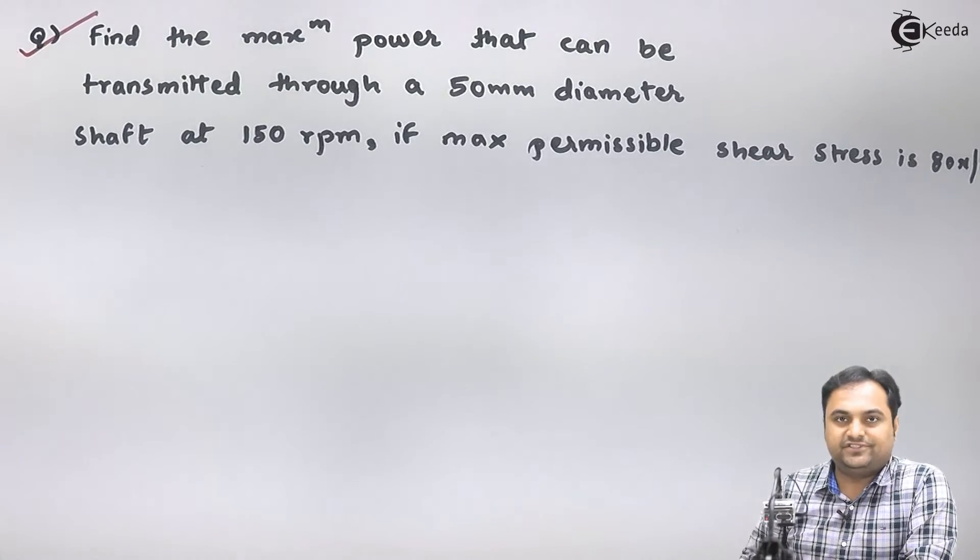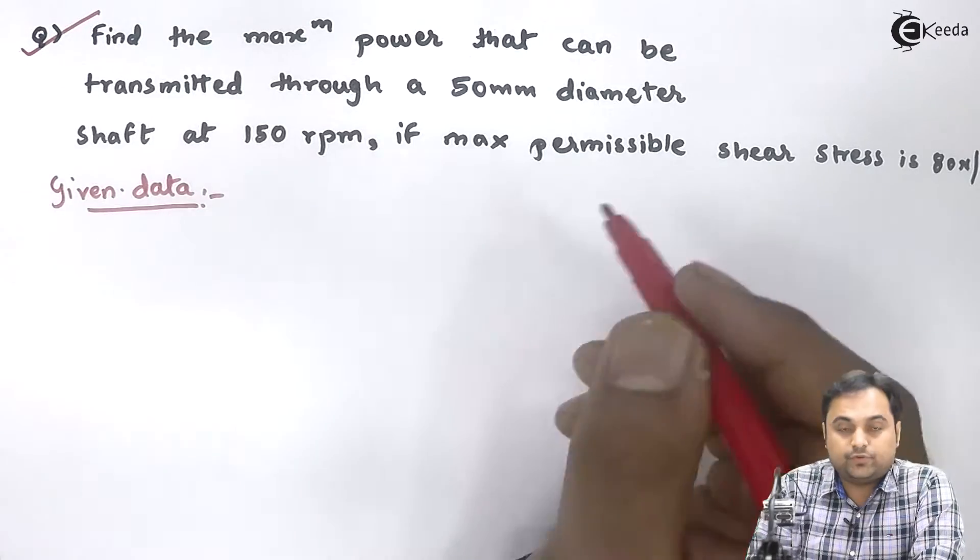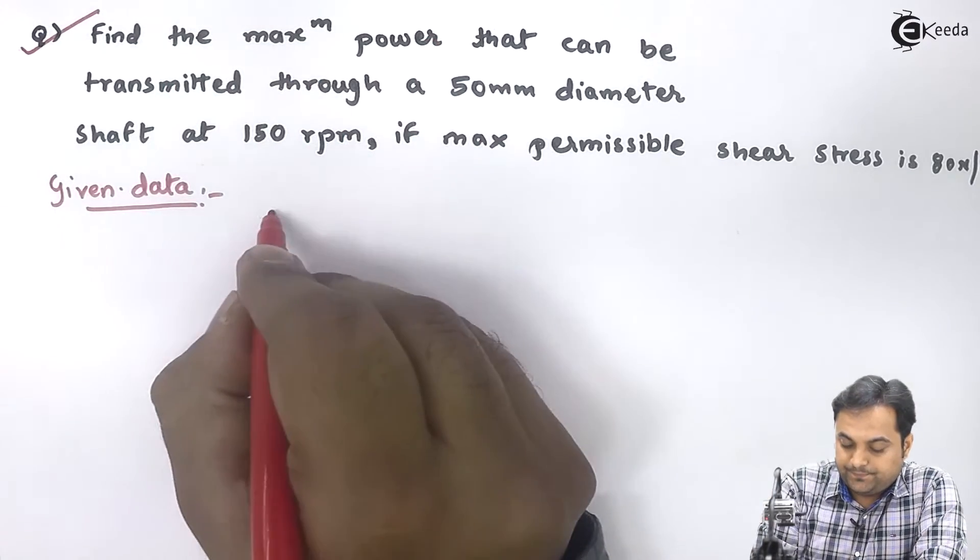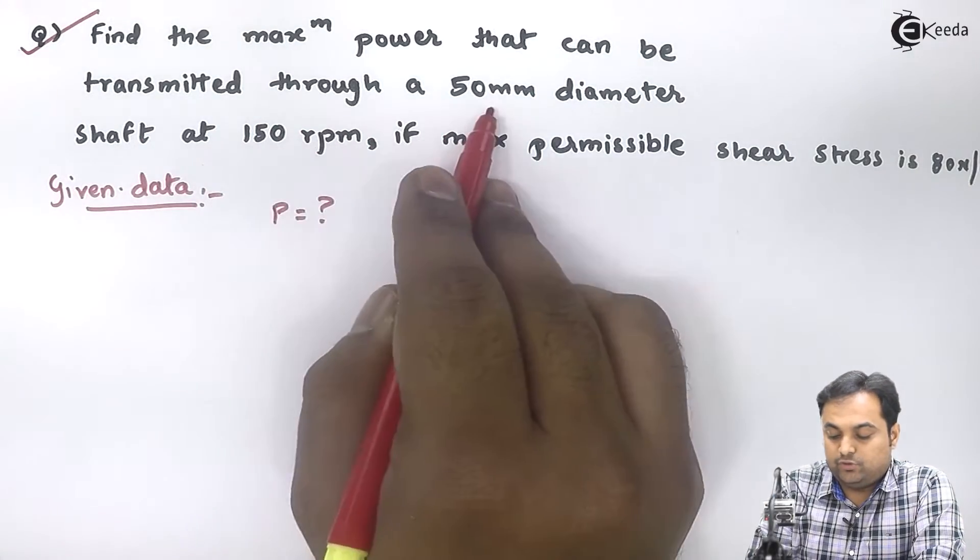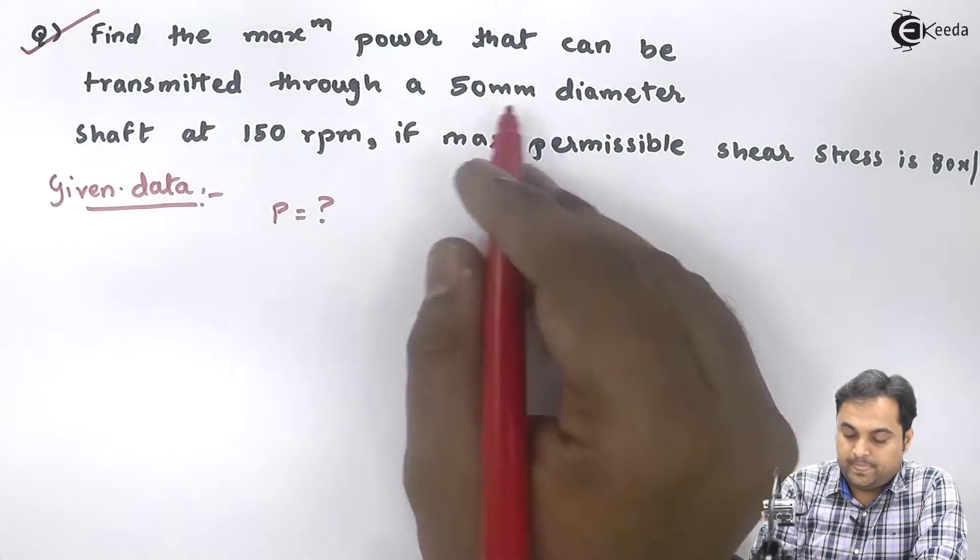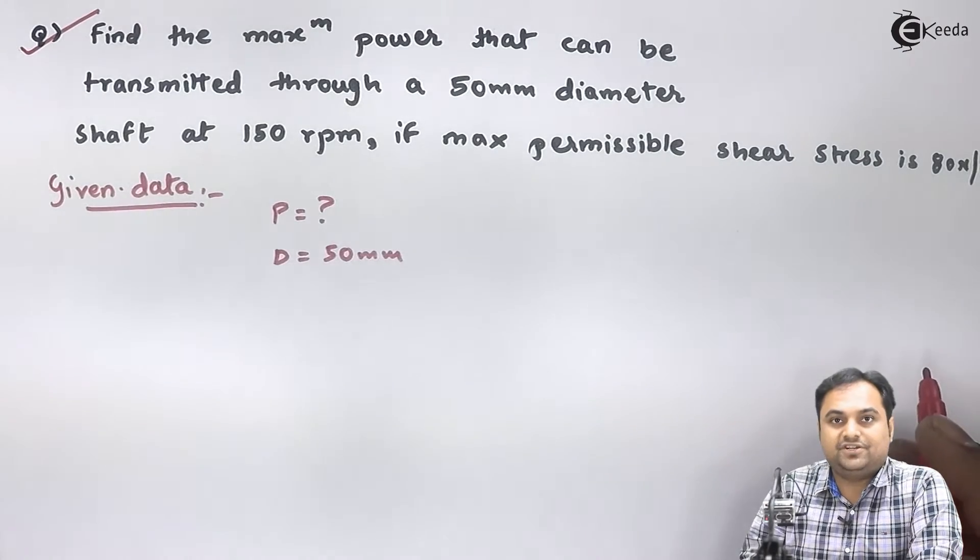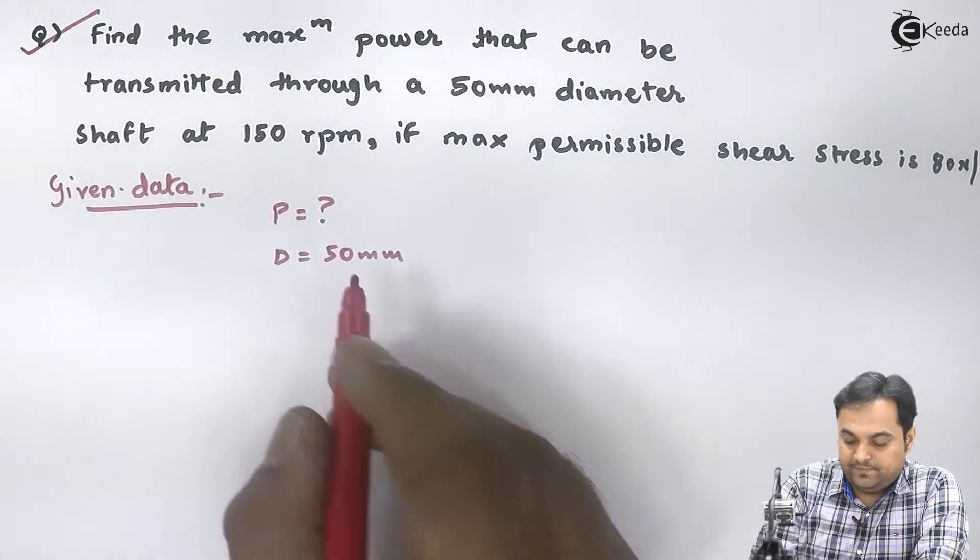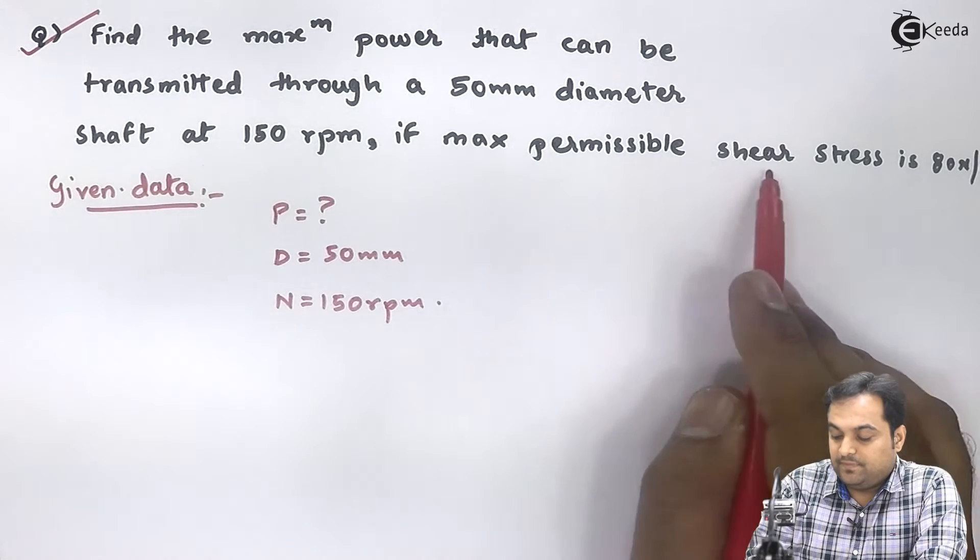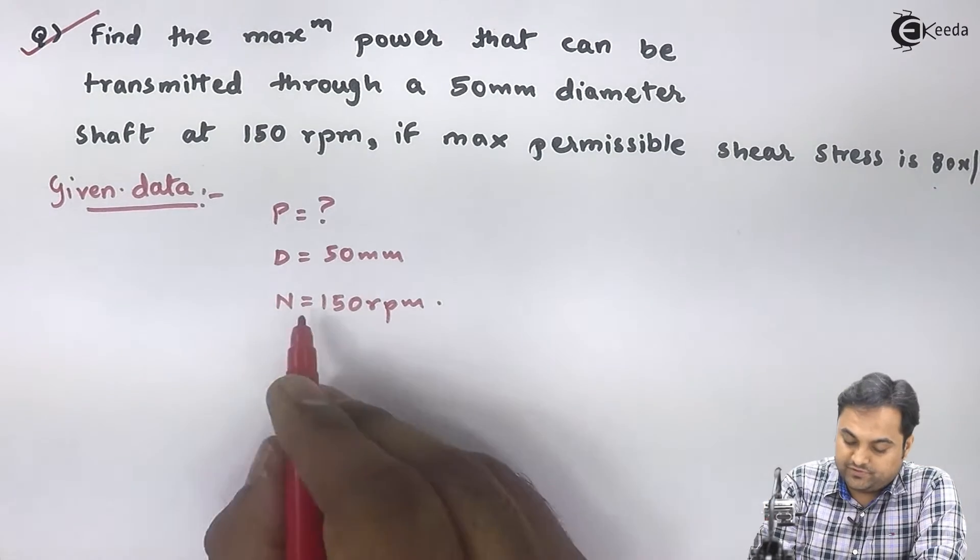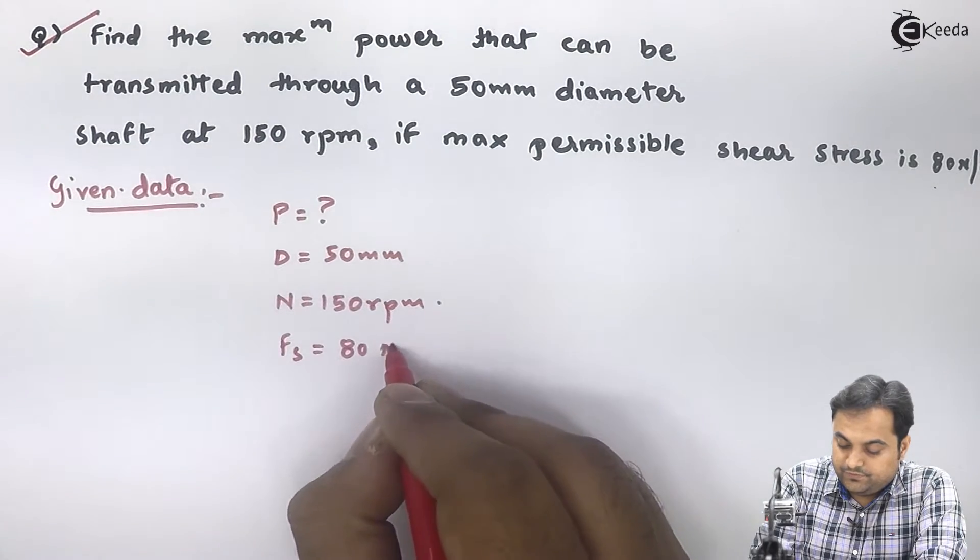Let us try to write the data first. The question is find the maximum power, so capital P is what we have to calculate. The diameter of the shaft is D = 50mm, so it is a solid shaft at 150 rpm. Maximum permissible shear stress FS = 80 Newton per millimeter squared.